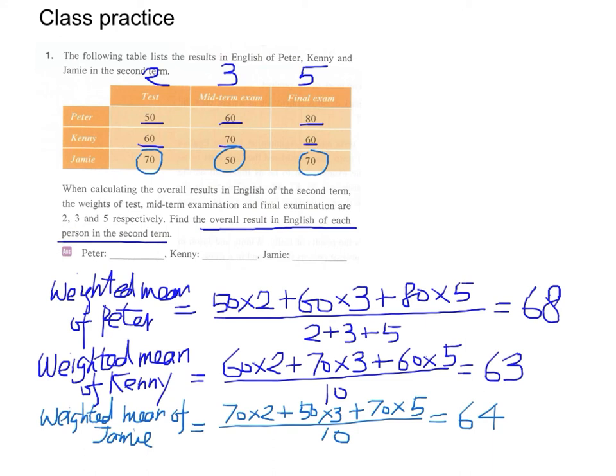We have to do a little bit more. Because we know that the weighted mean of Peter is the highest. So can we explain this effect or phenomenon? Why Peter has the highest weighted mean?